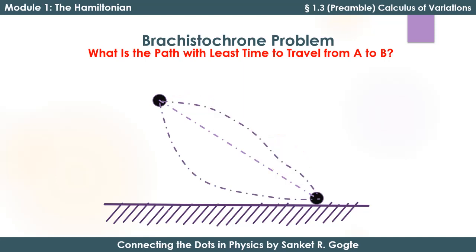Now how many such paths are possible? Of course there are infinitely many paths possible from point A to point B. I have shown three such paths here as dotted lines. One thing is true for all these infinitely many paths: no matter what path is taken by the body, when it reaches point B its velocity will be the same for all paths.